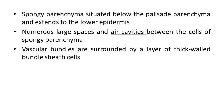Vascular bundles — the arrangement of xylem and phloem — are surrounded by a layer of thick-walled bundle sheath cells. This is how epidermis, mesophyll, and vascular bundles are generally arranged in a dicot leaf.